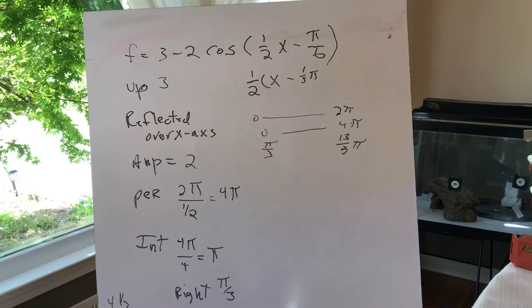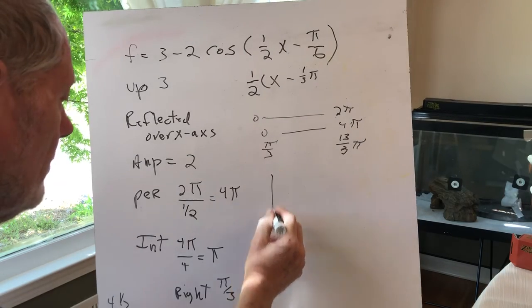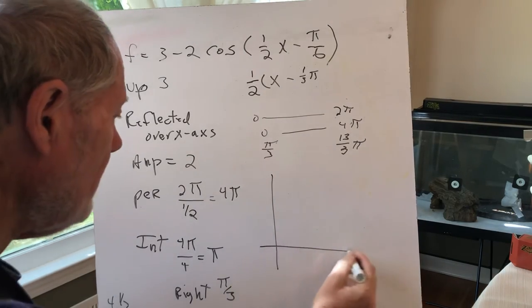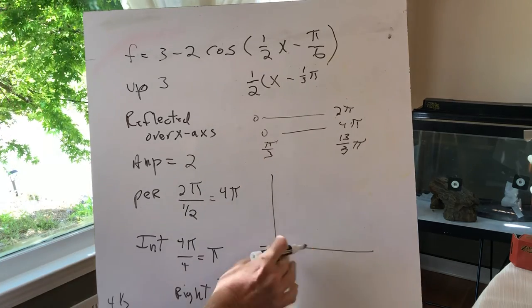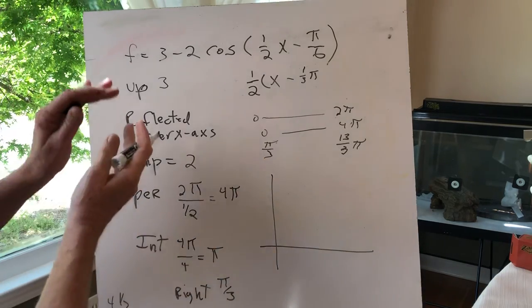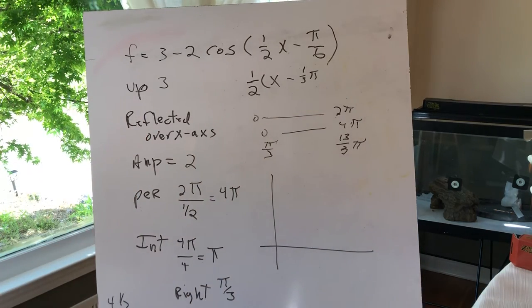Now we'll draw my axis. I'm putting the x-axis down low because I know I'm going to be shifting it up three. That's going to be the end of part one, so then you can watch part two.